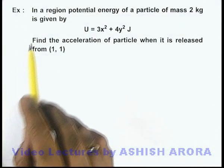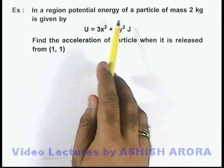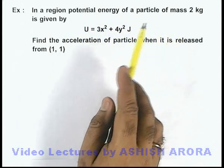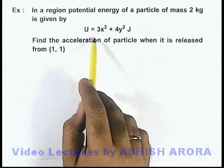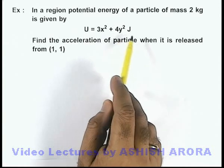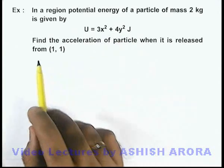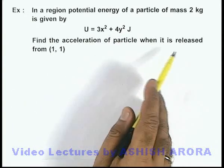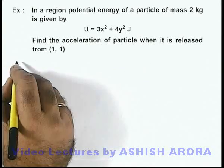In this example we are given that in a region, potential energy of a particle of mass 2 kg is given by U = 3x² + 4y² joules. And here we are required to find the acceleration of particle when it is released from the point (1, 1).